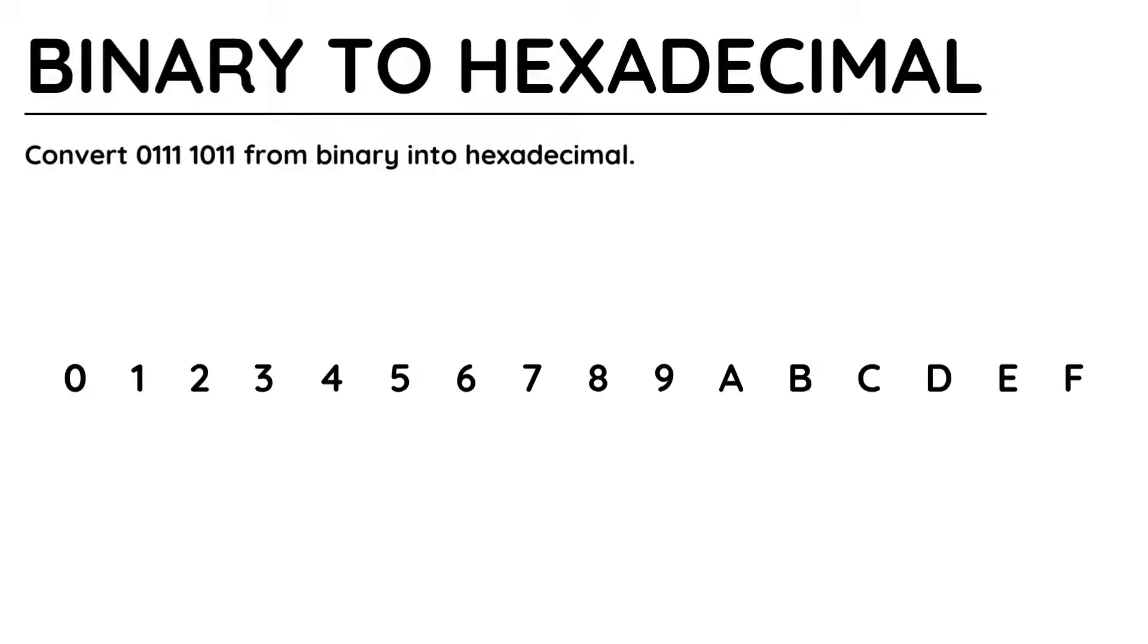Hexadecimal is a base 16 number system, meaning it uses 16 different values. Hexadecimal uses 0 to 9, just like the denary system, and then A to F.